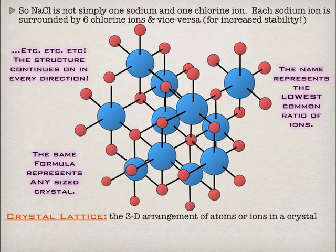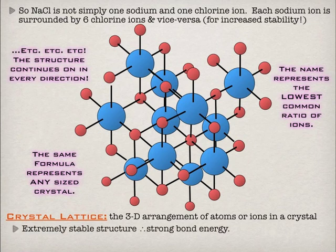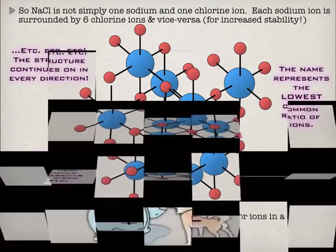This 3D arrangement is called a crystal lattice — you've certainly heard the term lattice before, whether you see the lattice on the side of a house or the lattice top of a pie. Think of a jungle gym of alternating ions. Due to the fact that these ions are surrounded by ions of the opposite charge, they're extremely stable. They have strong bond energies because you're surrounded by everything you want to be around — opposite charge. These are pretty hard to break apart.